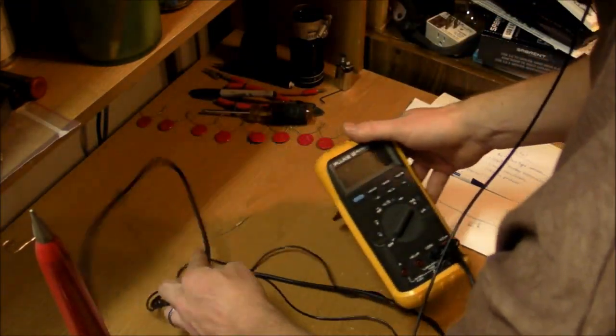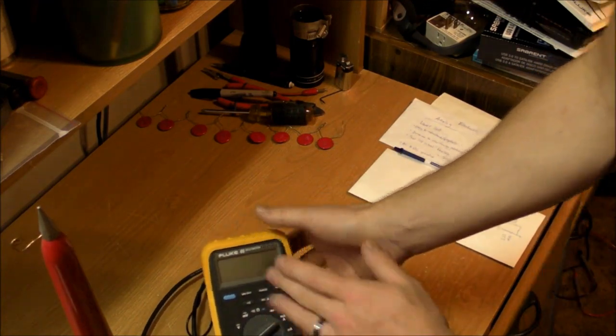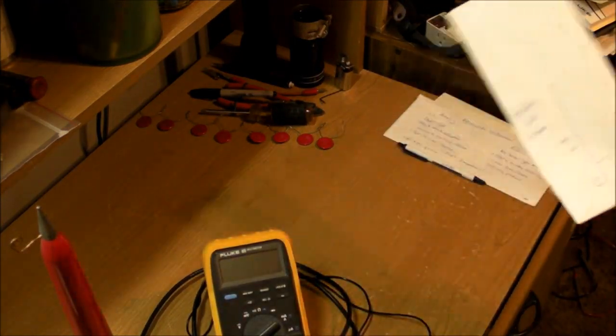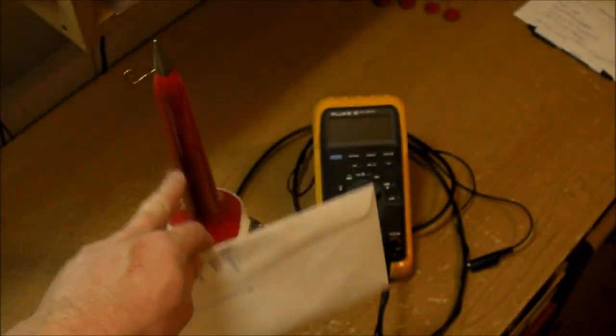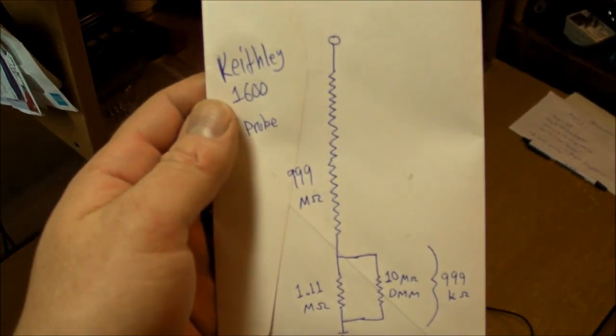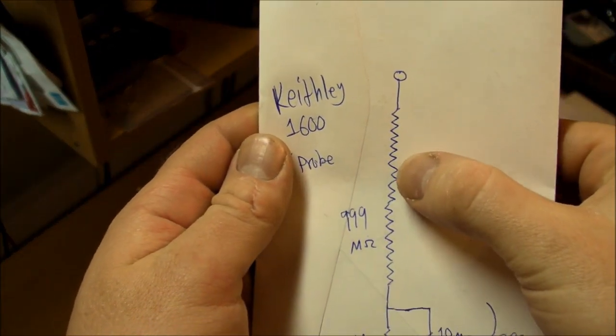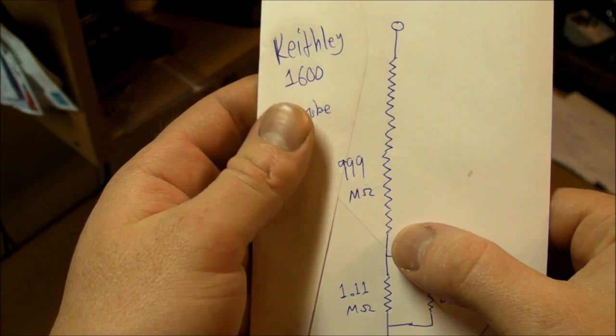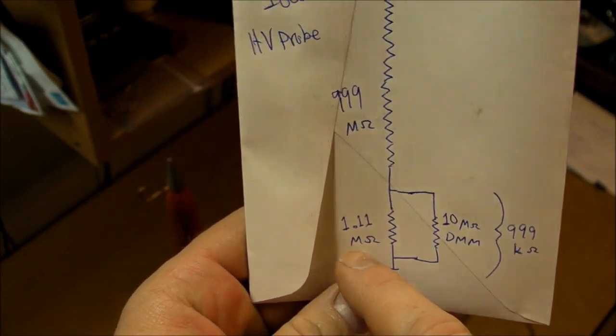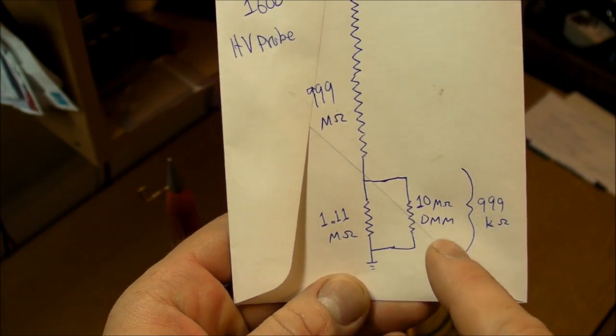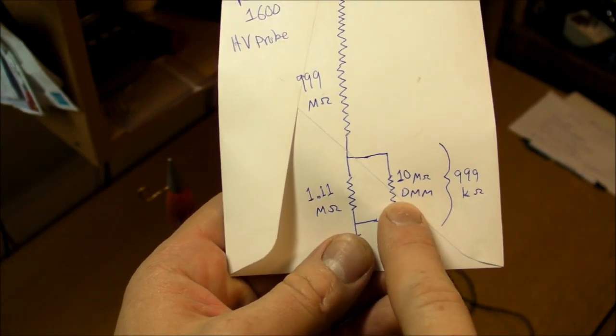It goes straight into a DMM like this with a 10 megohm impedance. The main body of this probe inside the red stick is a very long 999 megohm resistor.